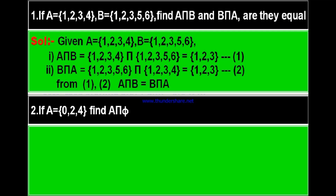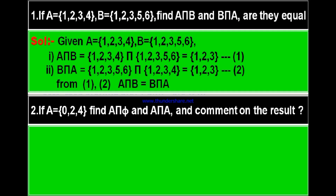Now question number 2. If A is equal to set {0, 2, 4}, then find A intersection ∅ (empty set) and A intersection A, and comment on the result.